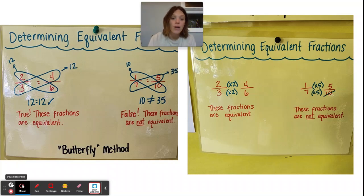So quick reminder, the butterfly method is where we multiply across the fractions, and if the product is the same, then these fractions are equivalent. If when you multiply across the fractions, they are not the same product, then those fractions are not equivalent.